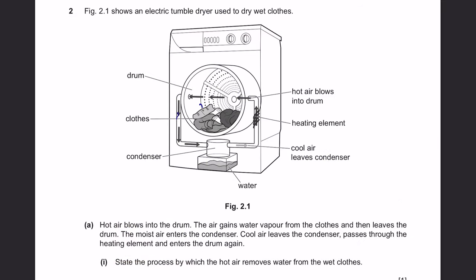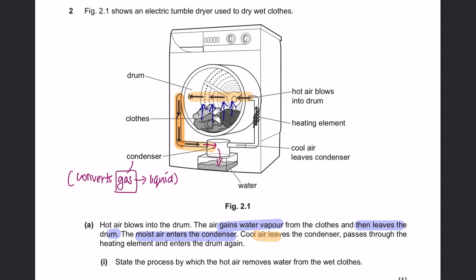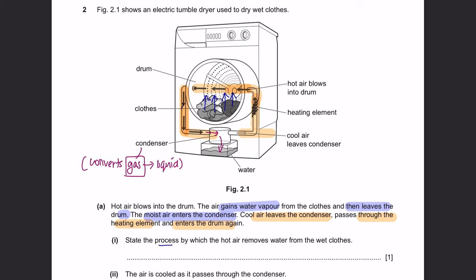Question 2: figure 2.1 shows an electric tumble dryer used to dry wet clothes. Hot air blows into the drum and gains water vapour from the clothes, then leaves the drum. The moist air enters the condenser, which converts the water vapour into liquid. The cool air then leaves the condenser, passes through the heating element, gets hot, and enters the drum again. Part 1: state the process by which hot air removes water — this is called evaporation.